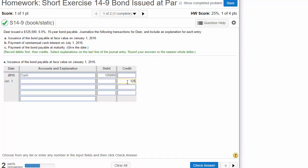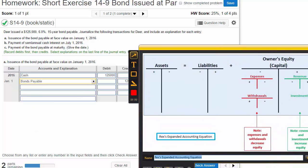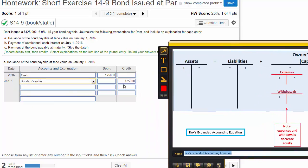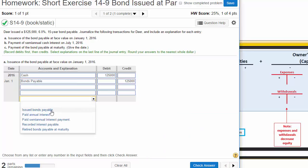We now have a debt called bonds payable. Just a reminder, liabilities go up on the credit side. That is why we are crediting bonds payable. Issued bonds payable is our memo.